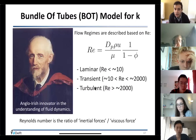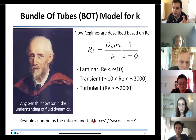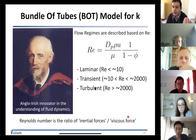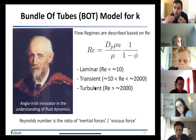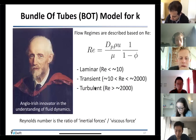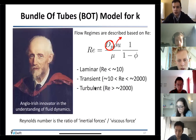Reynolds number is a non-dimensional number — the ratio of inertial forces, where you have density and momentum, divided by viscous forces. We have two acting forces when fluid flows: inertia and viscosity. For porous material, Reynolds number involves grain size diameter dp, density, fluid velocity, porosity, and viscosity.